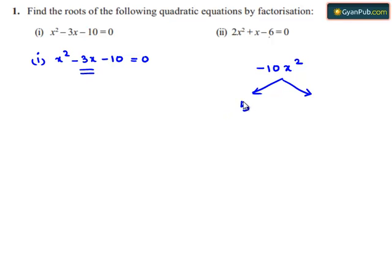So 5x and 2x can be their factors. Since we have minus sign here, if I put minus sign here, minus 5x plus 2x becomes minus 3x. So the correct factors are minus 5x and 2x.